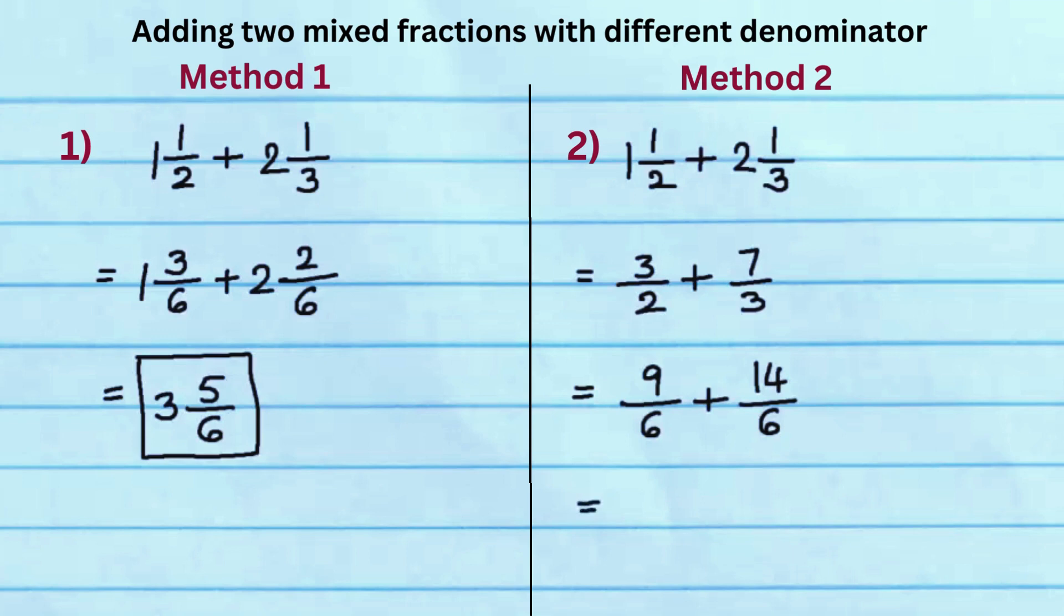Add the numerators 9 and 14 to get 23 and keep the denominator 6 as is. Since 23 by 6 is an improper fraction, simplify it to get the answer 3 and 5 sixths.